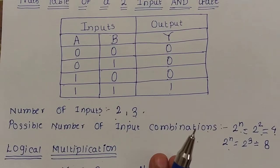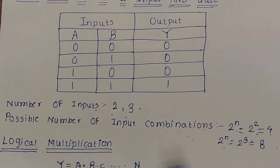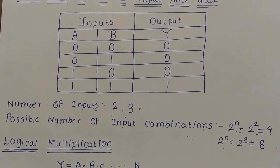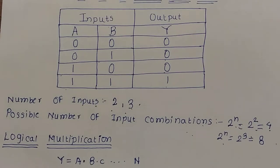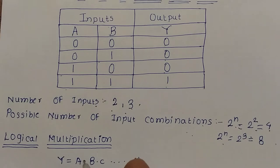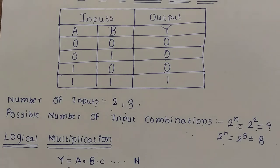Now we will see what is meant by logical multiplication. The AND operation is also referred to as logical multiplication. Therefore, it is symbolized algebraically by a multiplication dot placed between the two inputs. That is why AND is called logical multiplication, and Y = A·B is the output equation of the AND gate.